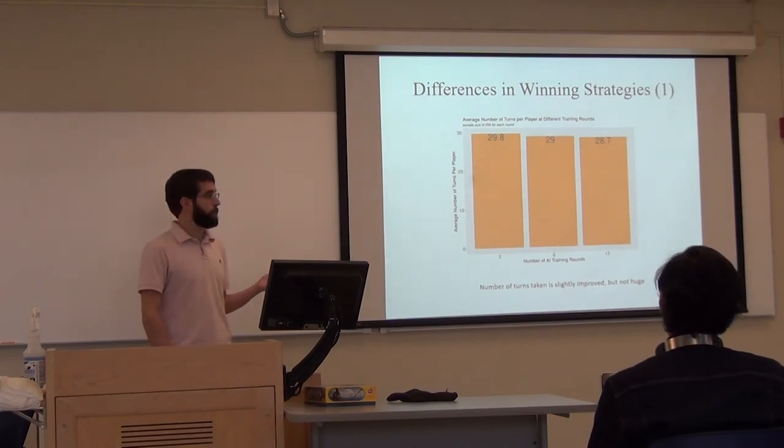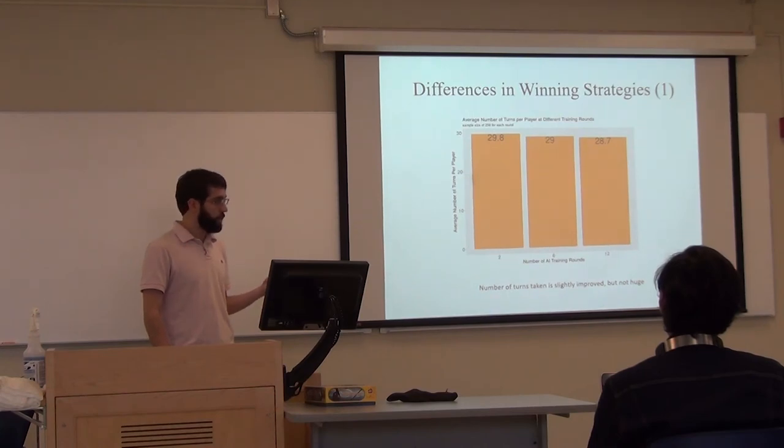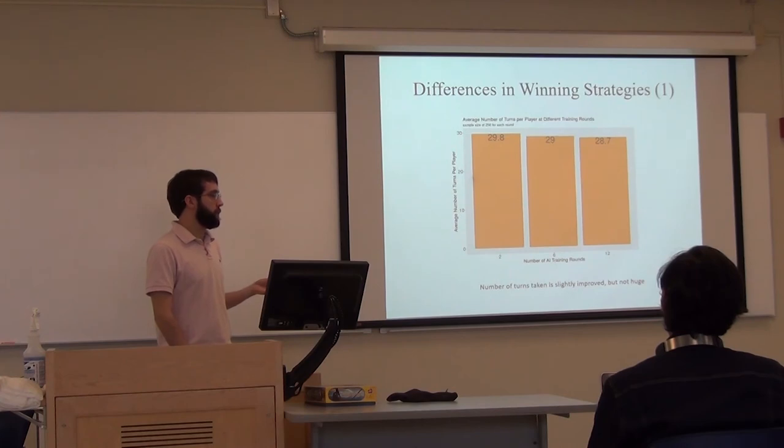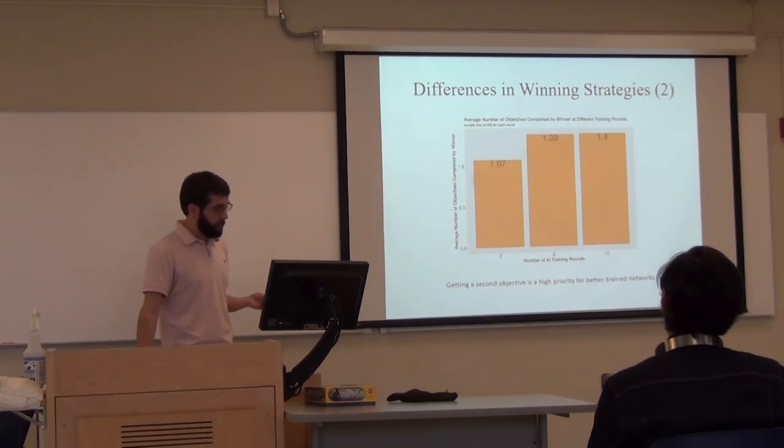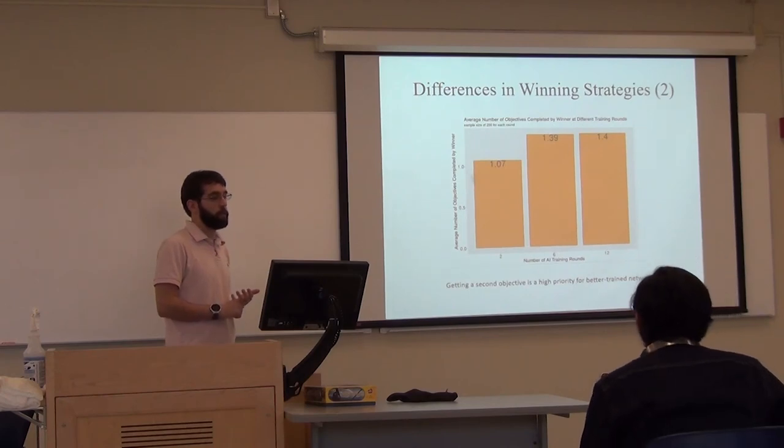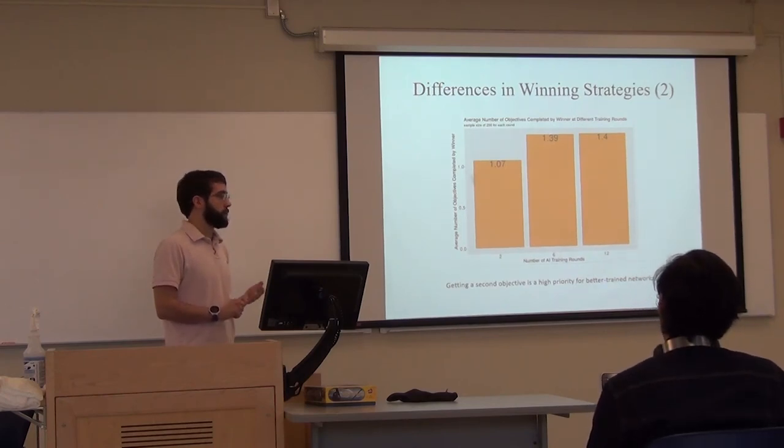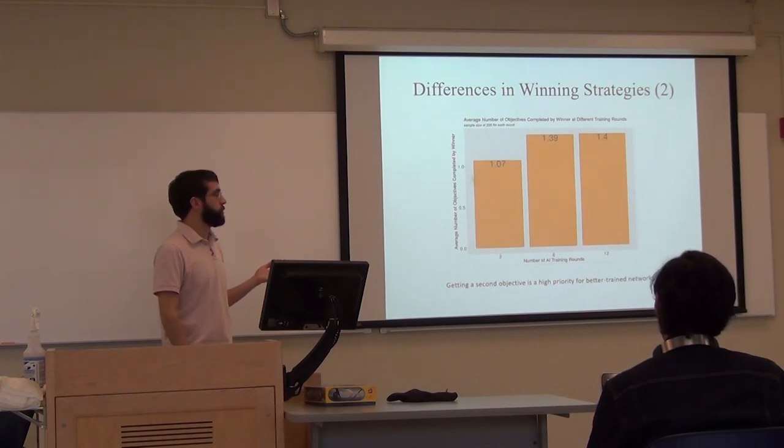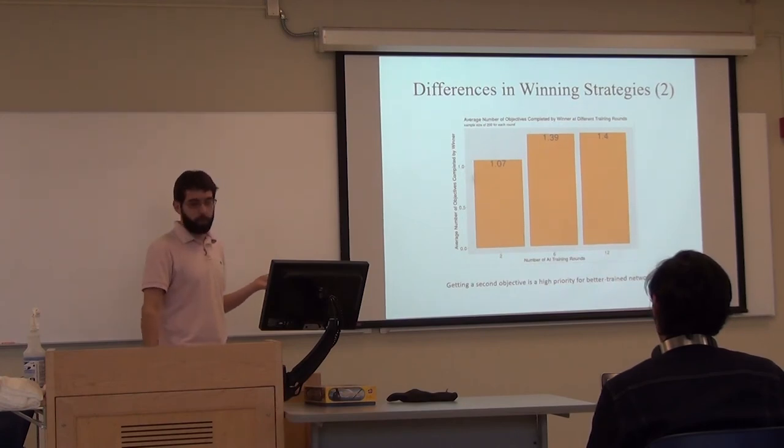One thing I wanted to look at is how many turns did it take between the rounds of training? It did not look like there was a huge difference. Players aren't getting that much faster when they're trained more. It seems like they're choosing ways that will help them overcome each other. They're trying to make decisions that will give them the best result in spite of the others trying to do the same. One thing I noticed between the strategies is that after six and twelve rounds of training, the AI had a much higher chance of getting multiple objectives per game. There's a total of five by default, but usually it's tricky enough to get one. Even though a two-round player knew that they were relatively important earlier.